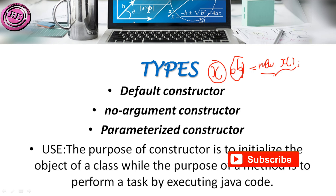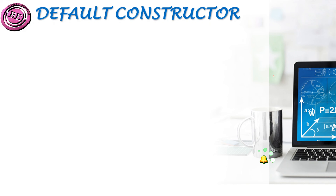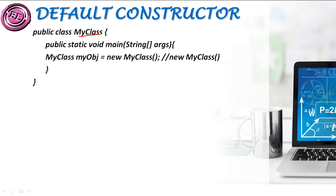In methods we have some particular task that has to be executed. Now let us explain each of the constructors. The first one is the default constructor. The constructor in which the computer calls the constructor itself is known as a default constructor. If the user doesn't provide any constructor, the computer will provide the constructor to that particular code, run the program, and give the output to the user. Here is an example — I have a class name and the main method, and in this main method I created an object but there is no constructor in this particular program.